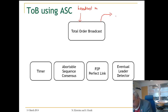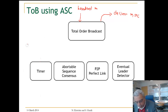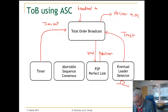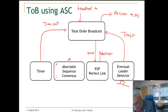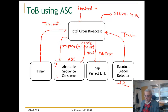The total order broadcast abstraction is going to use a number of components. It will use a timer — you will see why later, to get timeouts. It will use a perfect link abstraction to send and deliver messages. It will use a leader election Omega abstraction to know which node is the leader. And most importantly, it will use an abortable sequence consensus abstraction, which means a node can propose a message and get back either a decide or an abort.